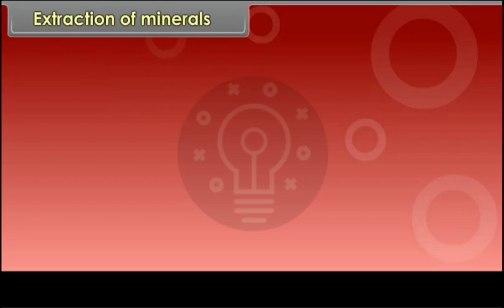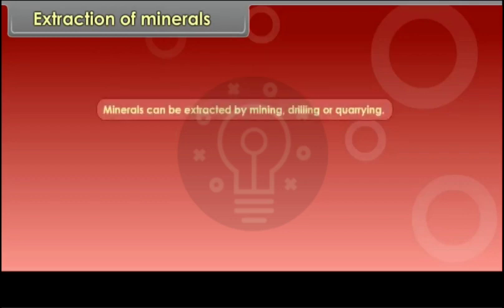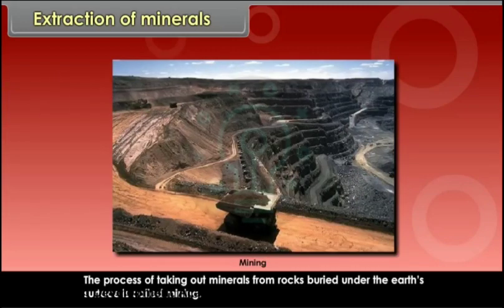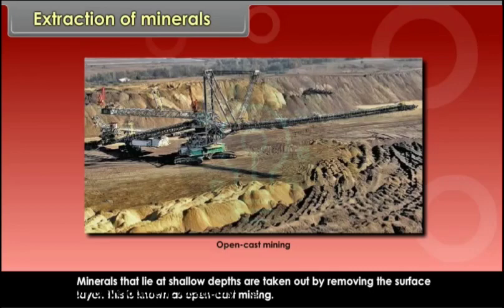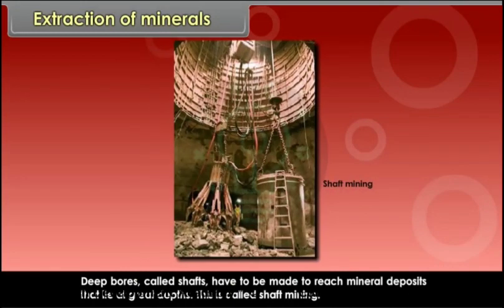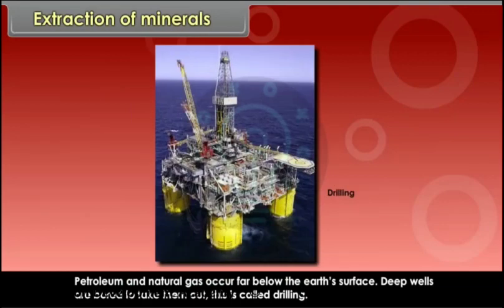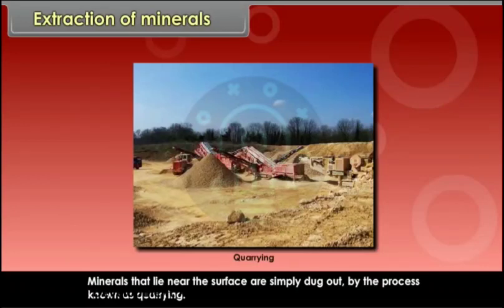Minerals can be extracted by mining, drilling or quarrying. The process of taking out minerals from rocks buried under the earth's surface is called mining. Minerals at shallow depths are taken out by removing the surface layer — this is known as open cast mining. Deep bores called shafts are made to reach minerals at great depths — this is called shaft mining. Petroleum and natural gas occur far below the earth's surface, and deep wells are bored to take them out — this is called drilling. Minerals near the surface are simply dug out by the process known as quarrying.